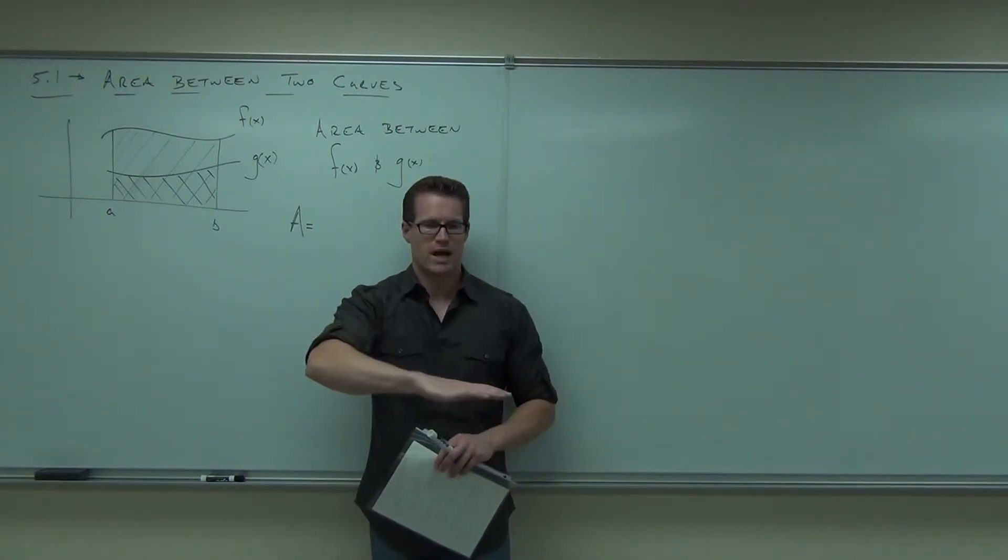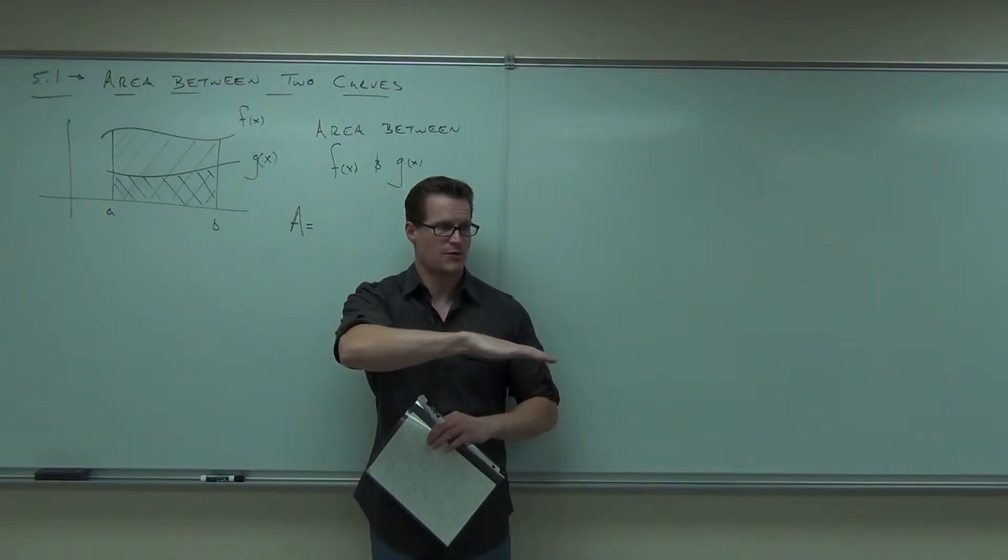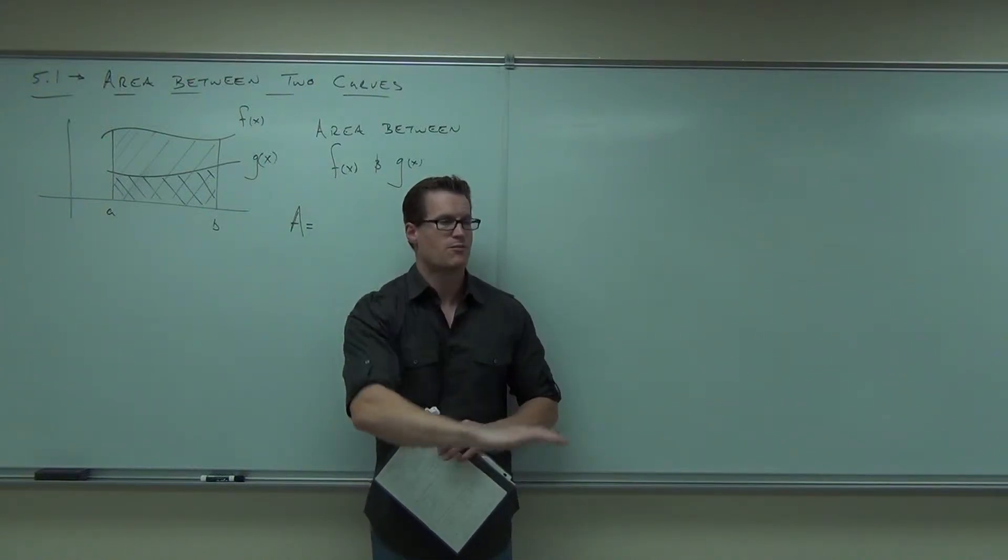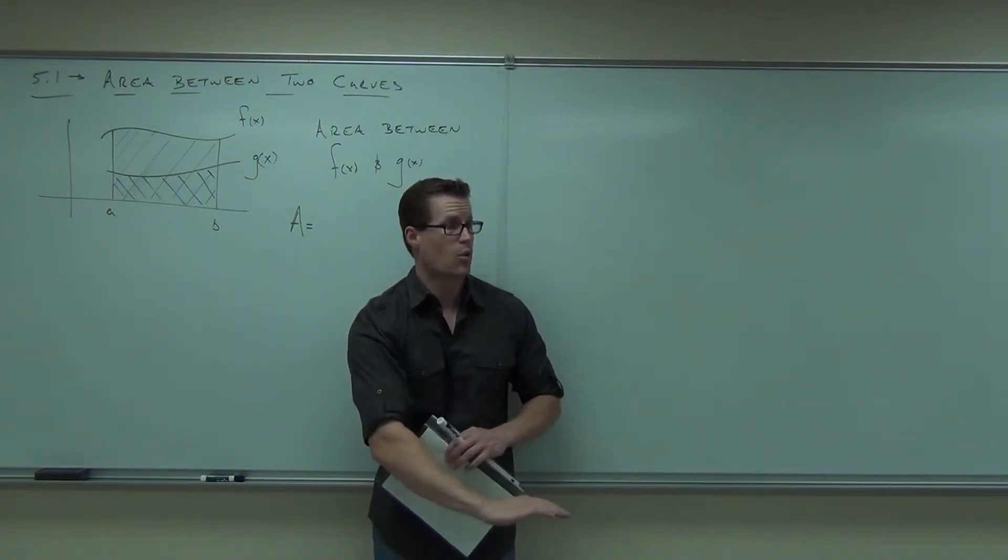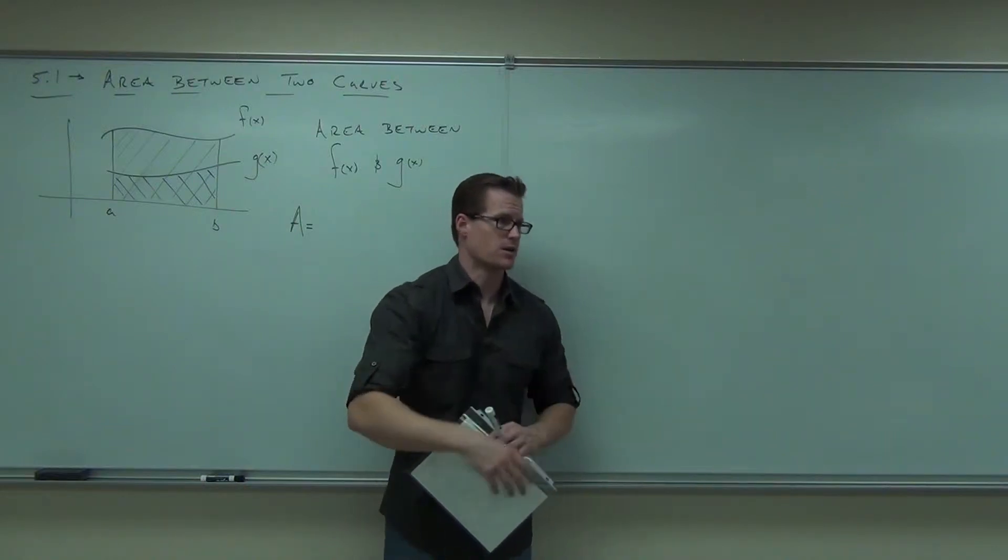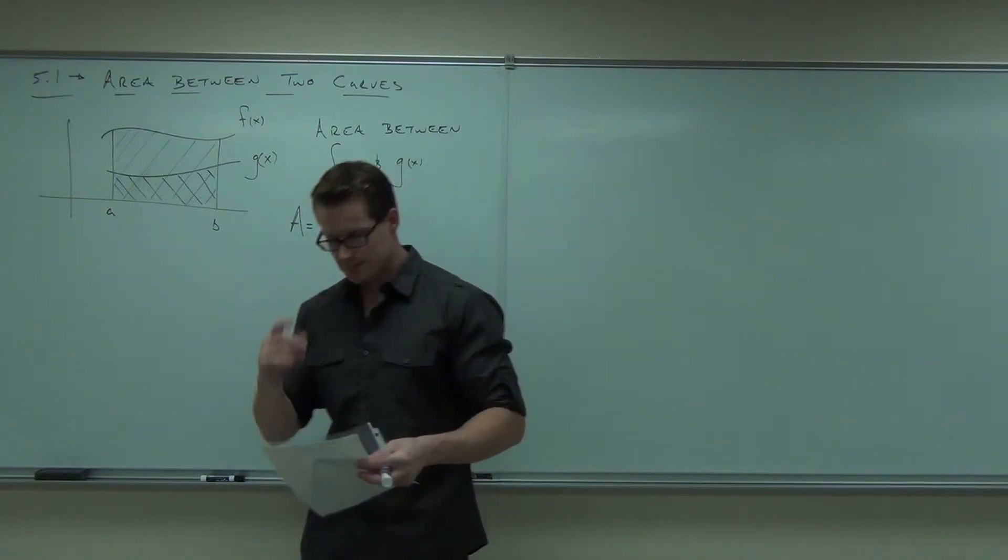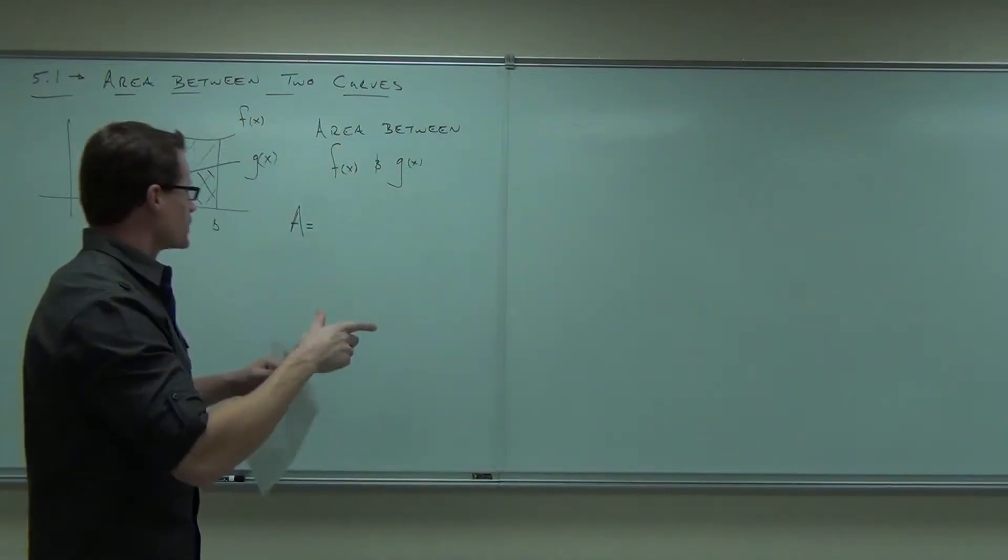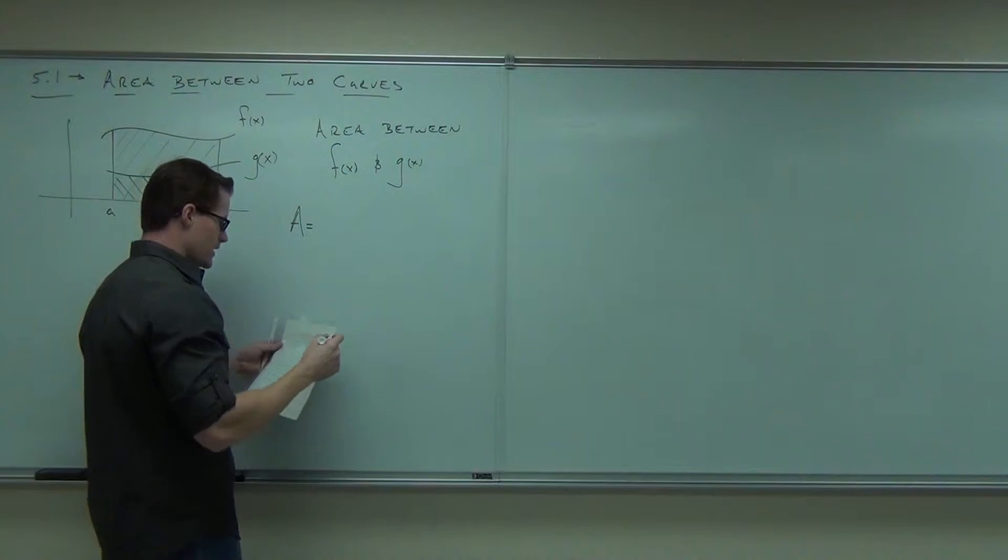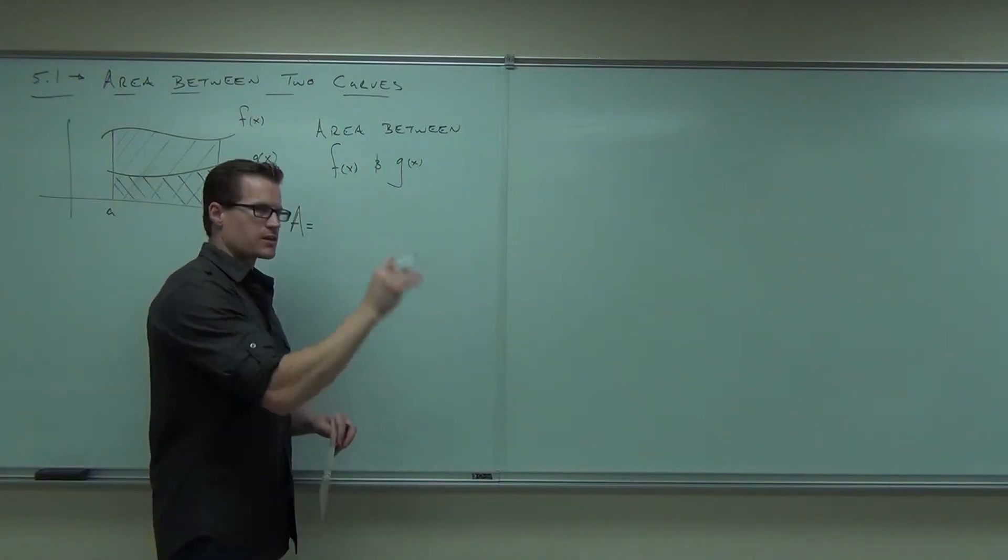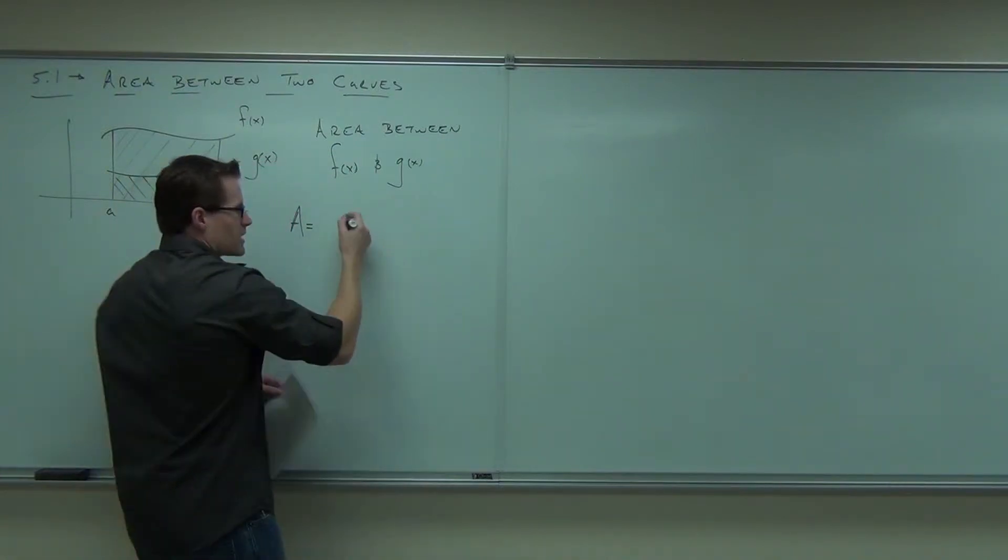Think about it. Subtract. The function on top would have a negative area. This would have more negative area. You're subtracting more negative area. That would become positive area. Did you get the idea? It's kind of cool. No matter what, it's going to be a positive area. So the idea was, I liked how it was said, take the area under f of x and subtract the area under g of x. That's what we're going to do.